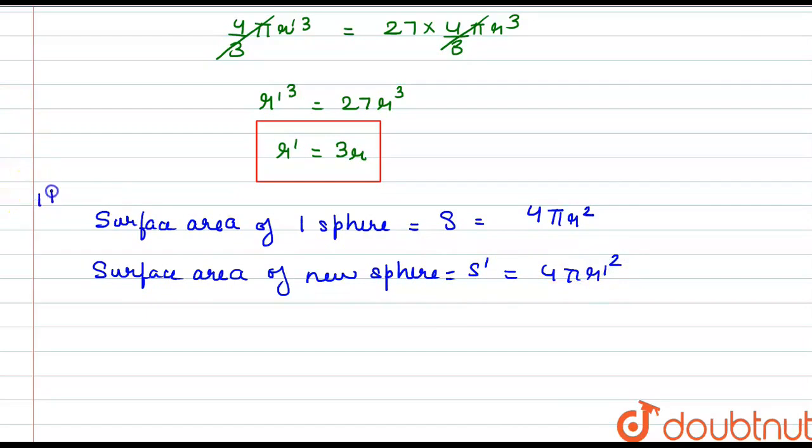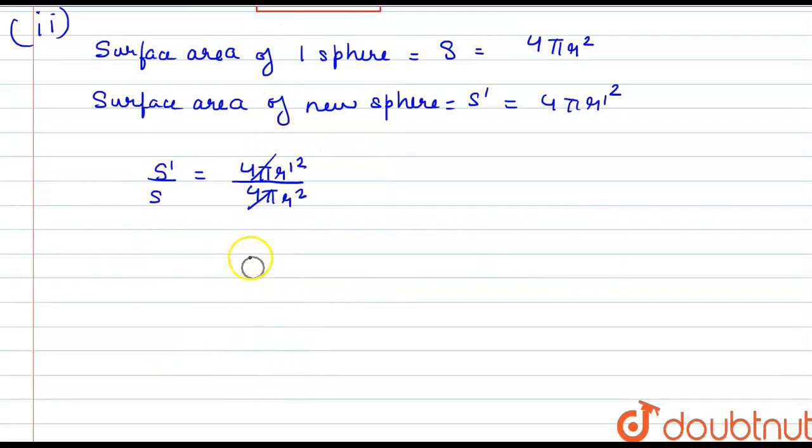Now we have to find the ratio S'/S, which will be 4πr'²/4πr². The 4π cancels out, so the remaining value for S'/S is r'²/r².